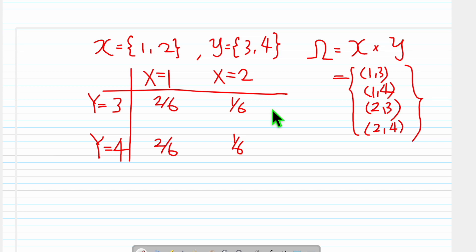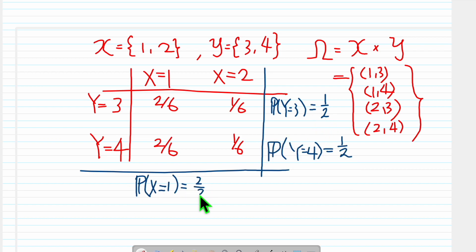Now whenever we see this kind of table, the first thing to do is marginal probability. So this half is basically 2/6 plus 1/6. So P(X=1) is 2/6 plus 2/6, that is 4/6, which means 2/3. Then what will be this guy? By complementary rule, we know it will be 1/3.